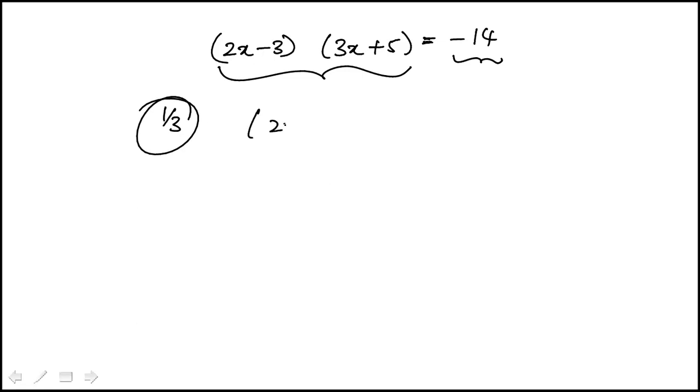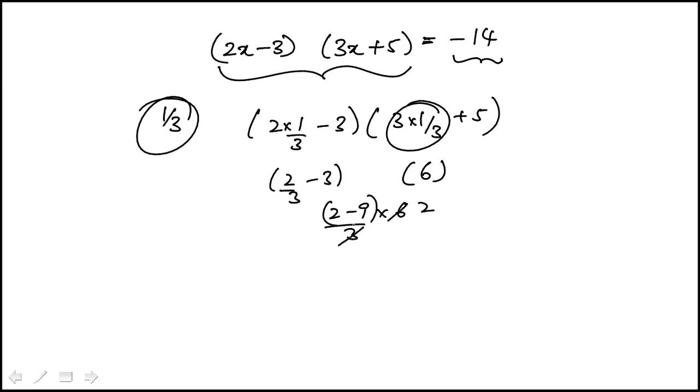So if I'm plugging in 1 third, you want to do this with the calculator. 3 times 1 third is 1. 1 plus 5 is 6. And then this is 2 thirds minus 3, which is 2 minus 9 over 3 times 6. That goes here. That's minus 7 times 2. It's minus 14 indeed. So that one works out.